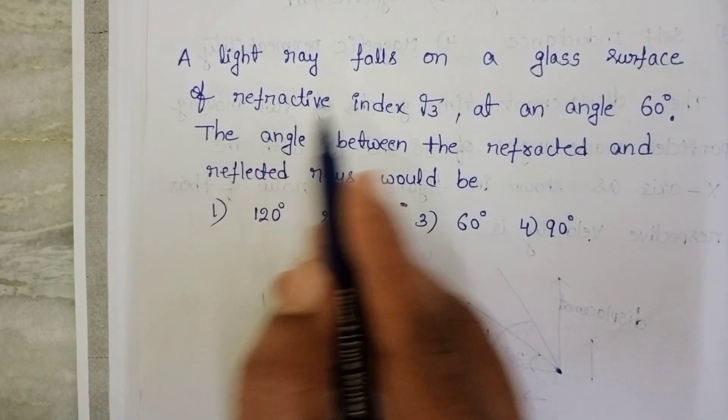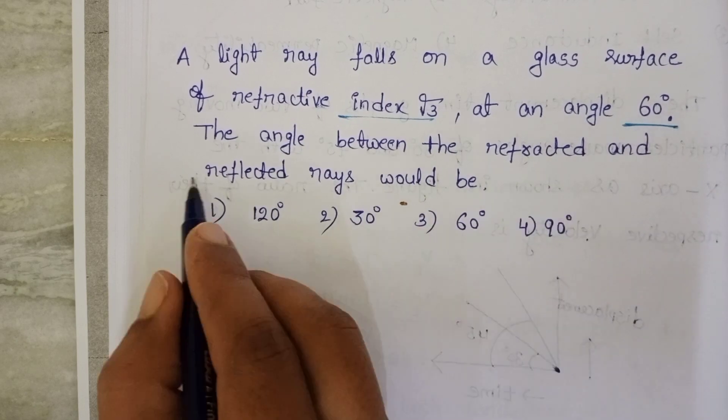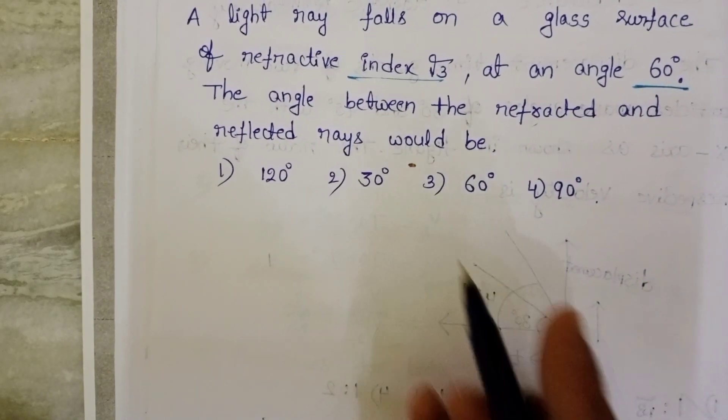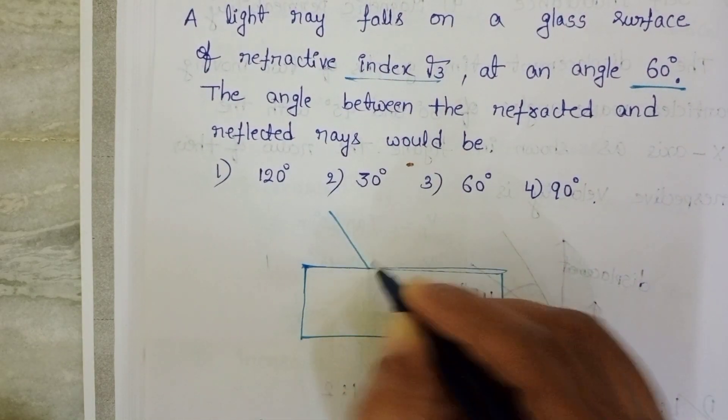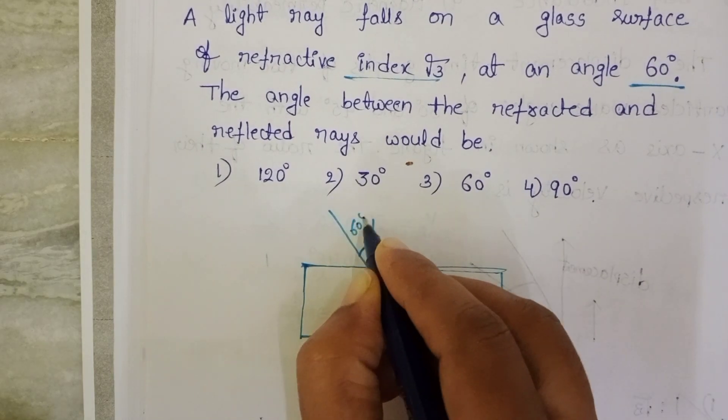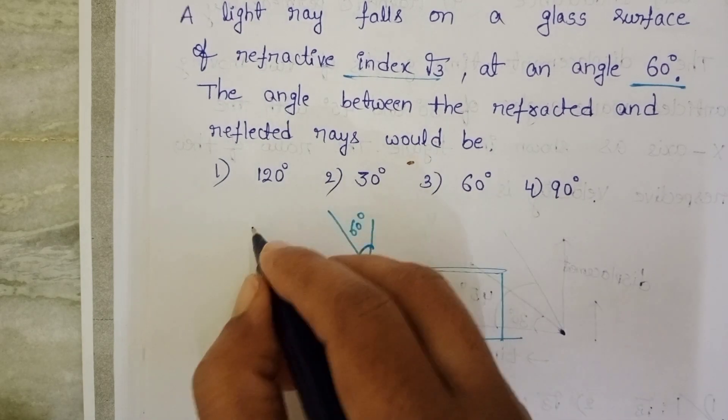A light ray falls on a glass surface of refractive index root 3 at an angle 60 degrees. The angle between the refracted and reflected rays would be: a light ray incident on a glass surface, given angle of incidence is 60 degrees and refractive index of the glass is root 3.